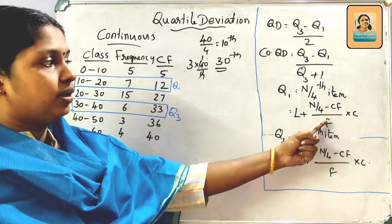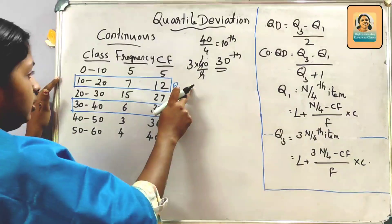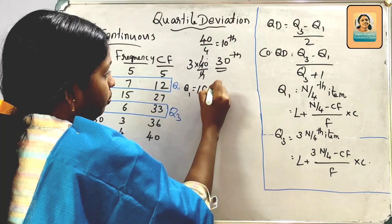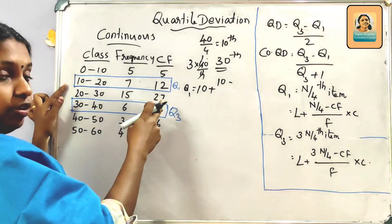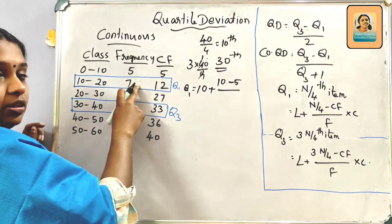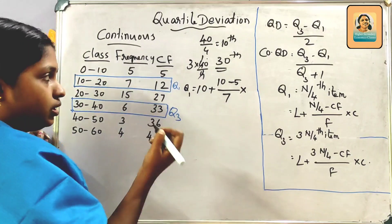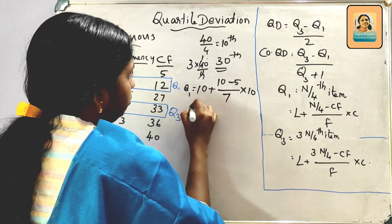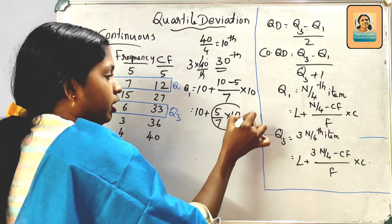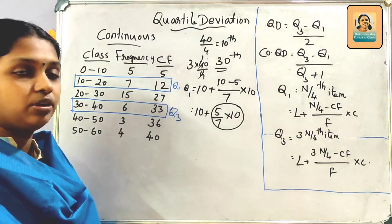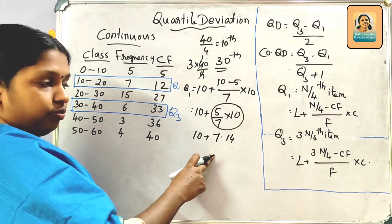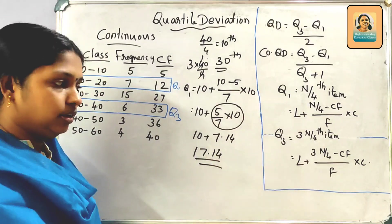Q1 = L plus (N/4 minus Cf) divided by F, into C. Q1 = 10 plus (10 minus Cf)/F into 10, which is the model class. We have 10 plus 5/7 into 10 = 10 plus 7.14 = 17.14. So Q1 equals 17.14.